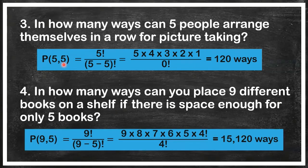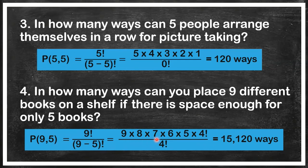Last permutation problem: we have nine different books to arrange on a shelf, but the space is only good for five books. So from nine books, we choose five at a time. The permutation formula applies here with N = 9 and R = 5. The 4 factorial cancels out, giving us 15,120 ways.